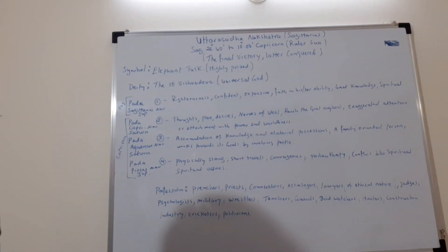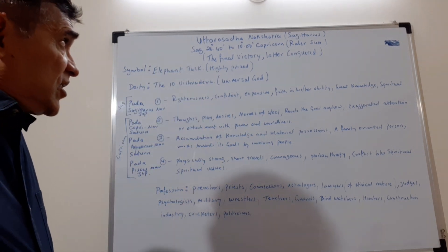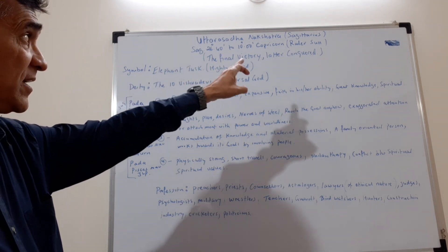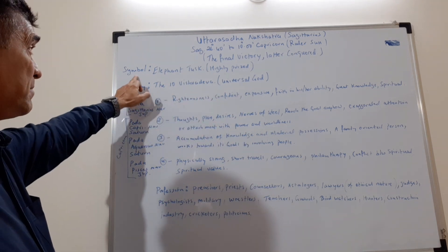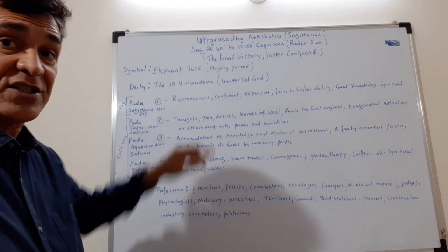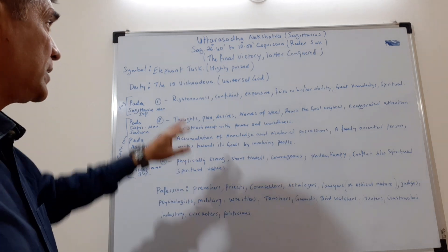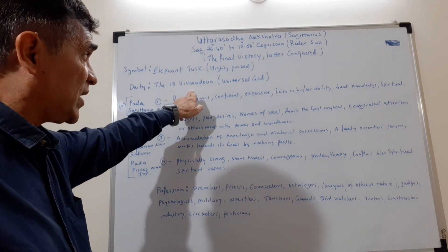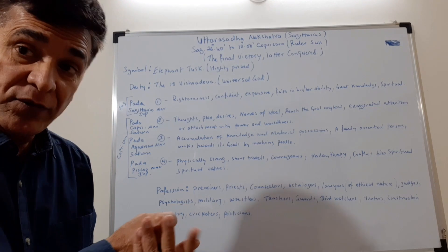Now at the board for further explanation: Uttara Ashada nakshatra spans Sagittarius and Capricorn, the ruler is the Sun, the tagline is 'the final victory' — the latter conquered. The symbol is the elephant tusk, a highly prized thing on this planet. The deity is the ten Vishwadeva — universal god — is the deity of this nakshatra.